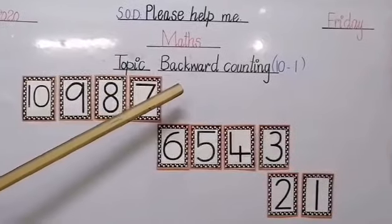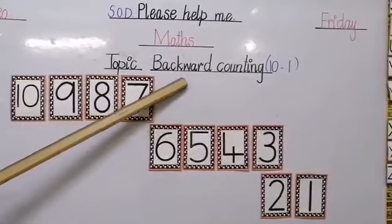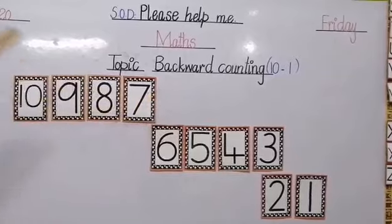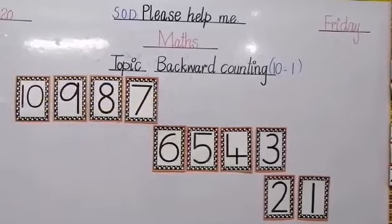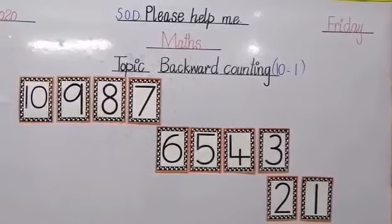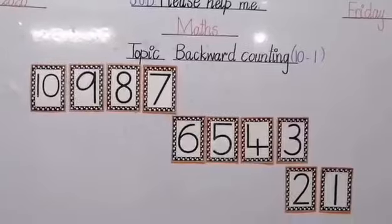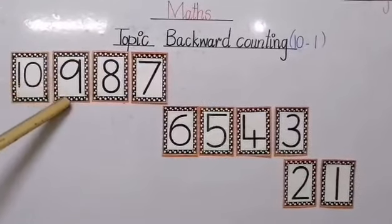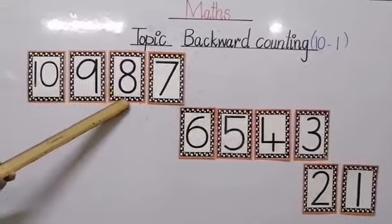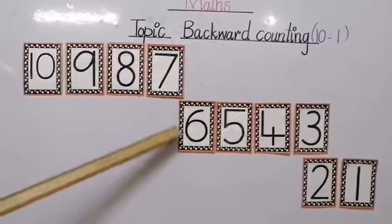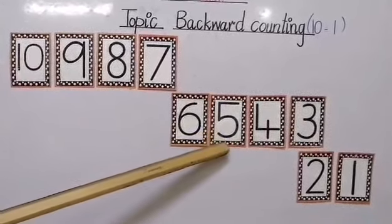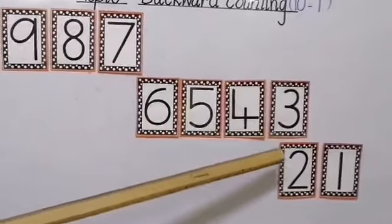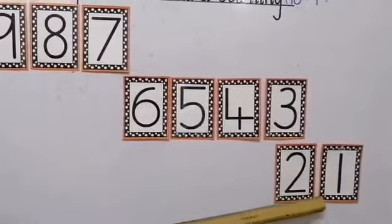Our topic is backward counting. And you know this thing very well. Now we're going to start from number 10. Let's follow through with me: 10, 9, 8, 7, 6, 5, 4, 3, 2, 1. That's great.